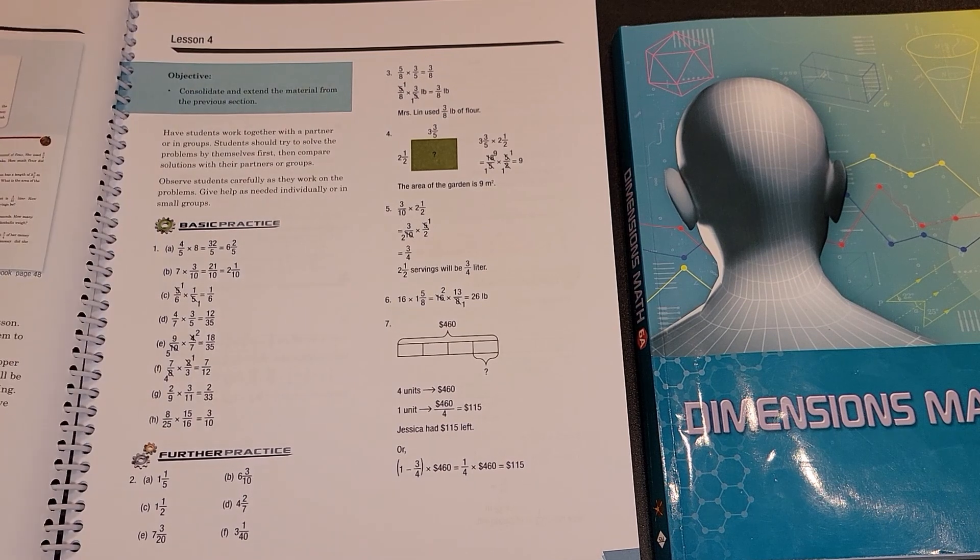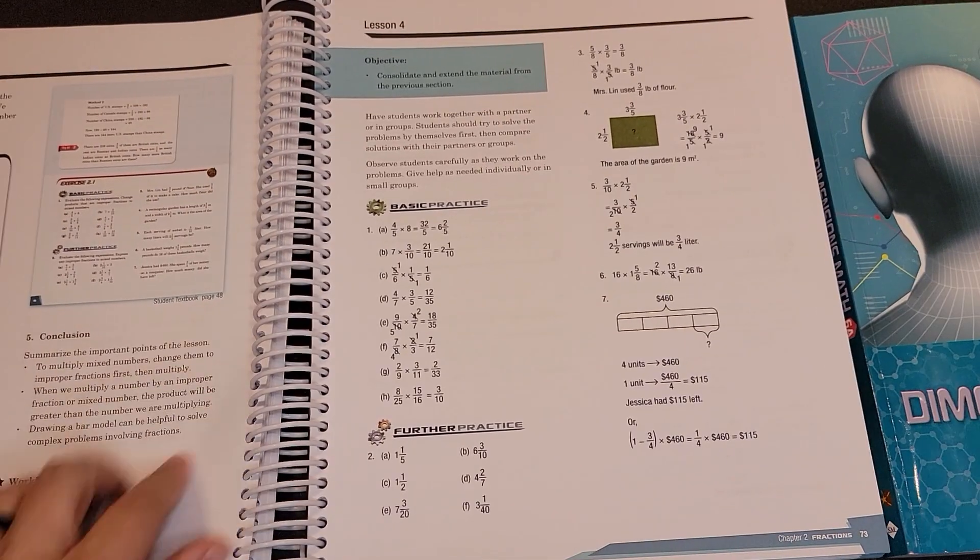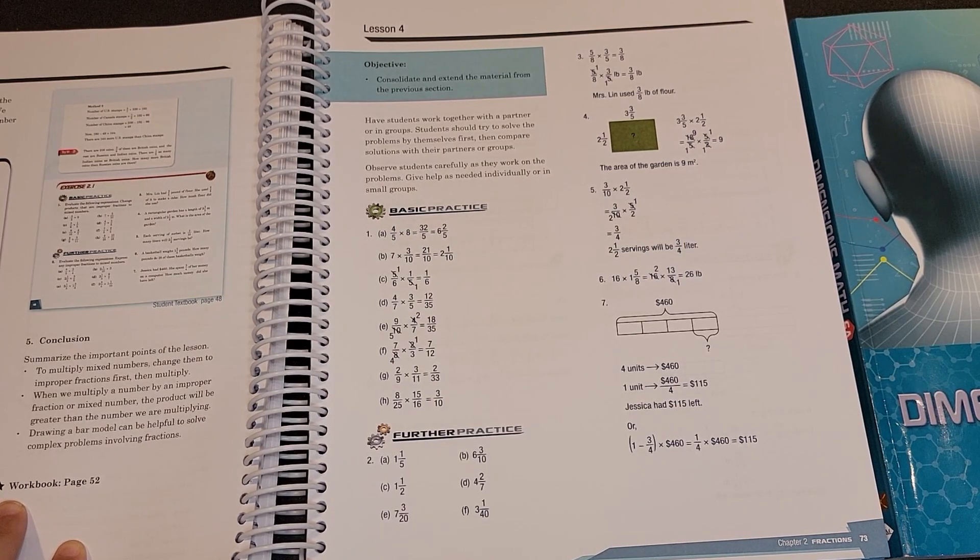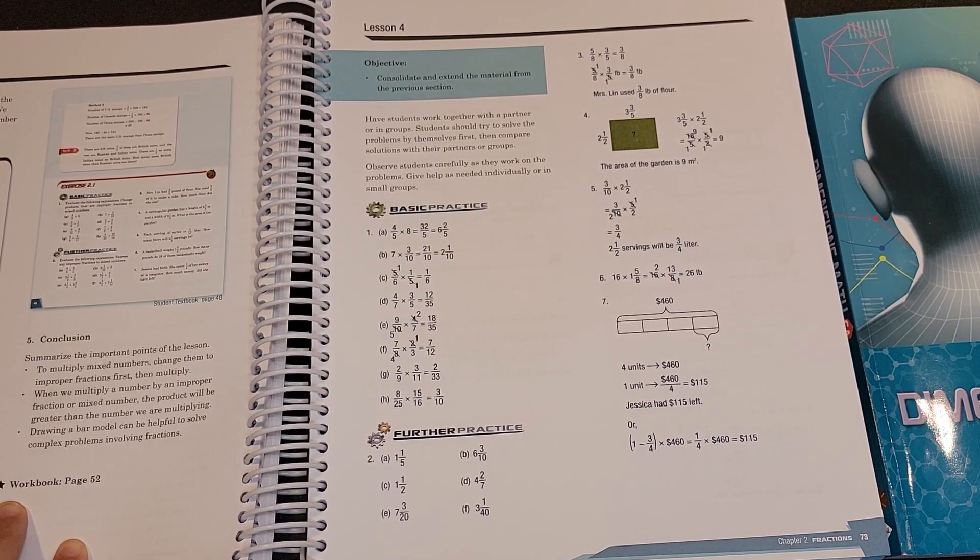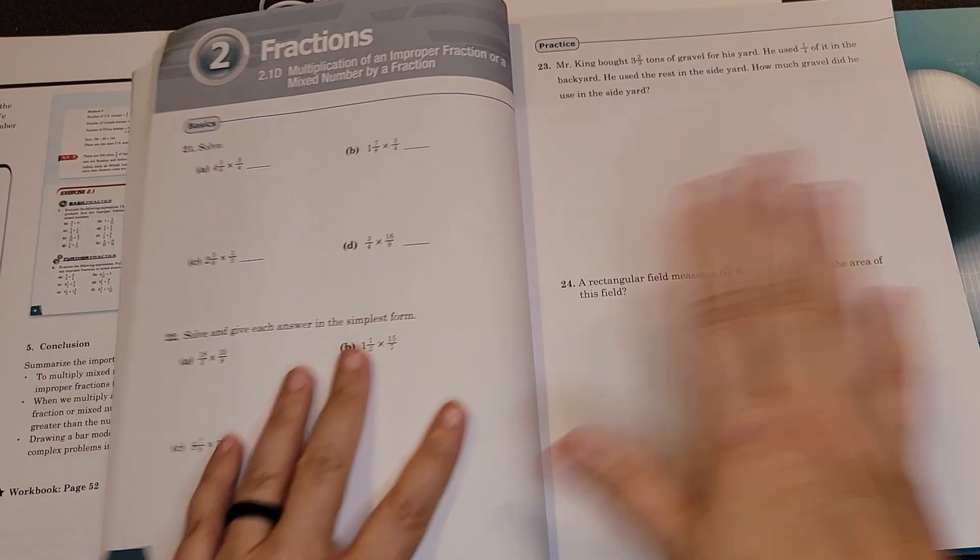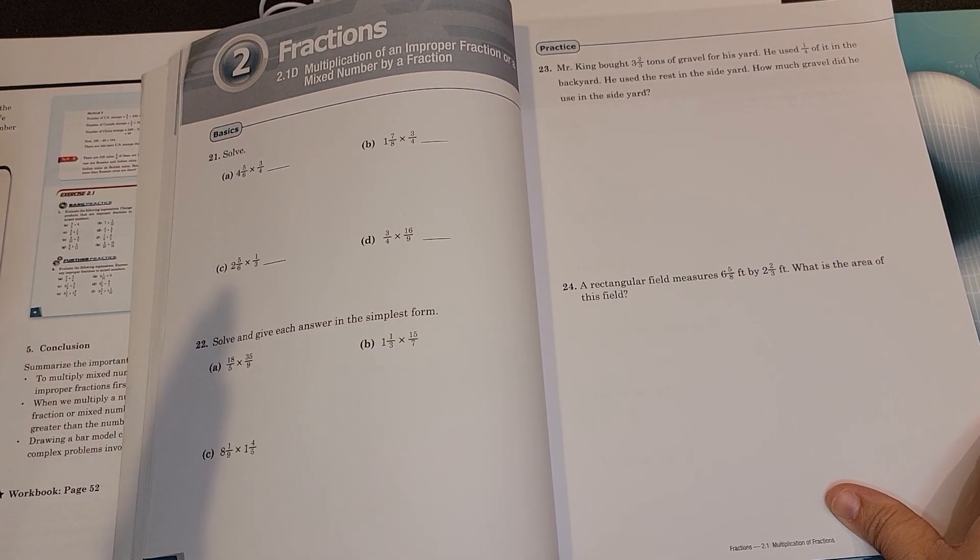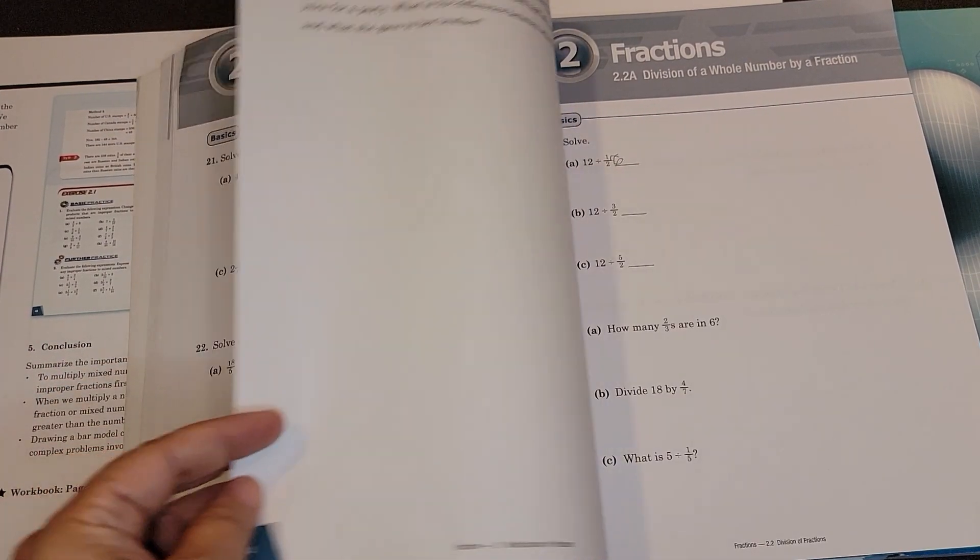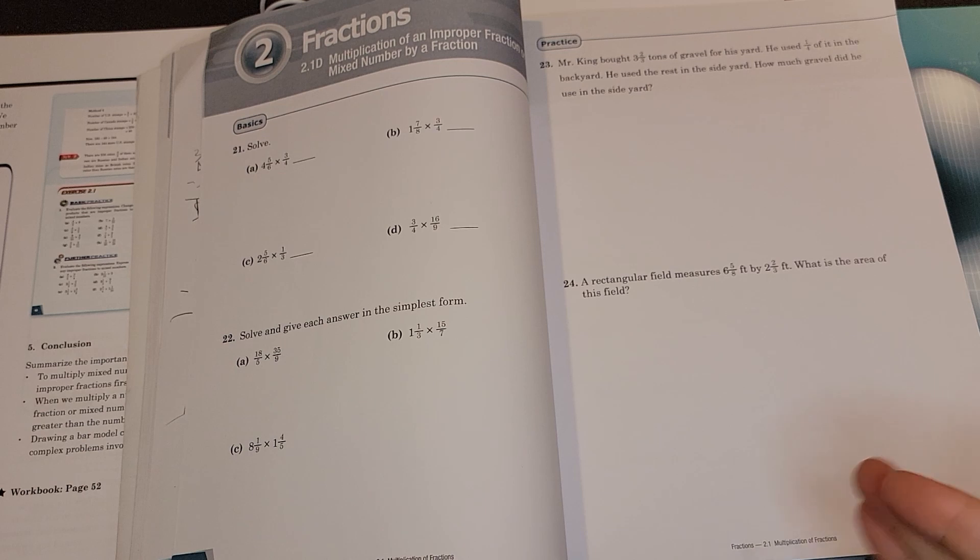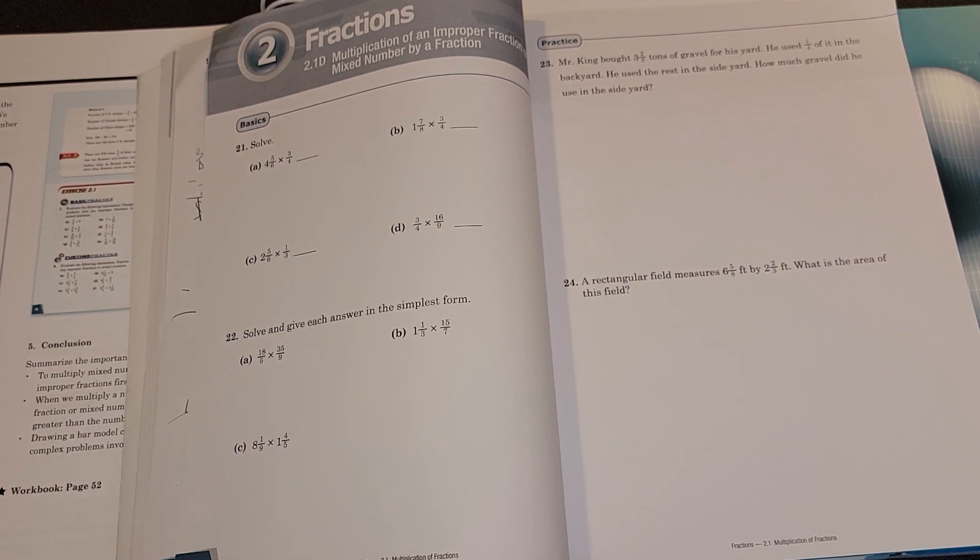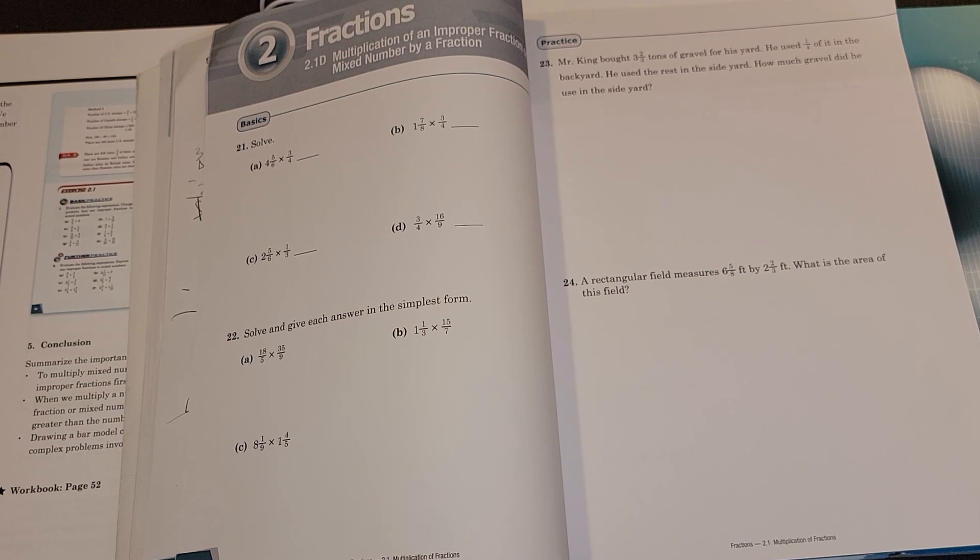But then when you have finished a section it will tell you where in the workbook to go for the problems relating to the pages that you just finished. So we will go to page 52 in the workbook and there are the basics, then practice, and then a challenge problem. There's normally only one to two challenge problems in the workbook and so you're seeing fewer problems again than what you used to.